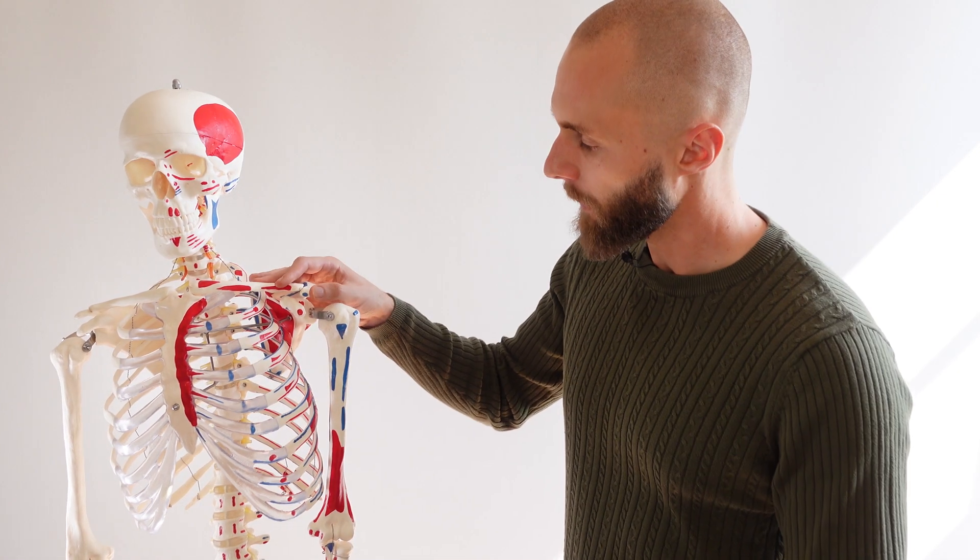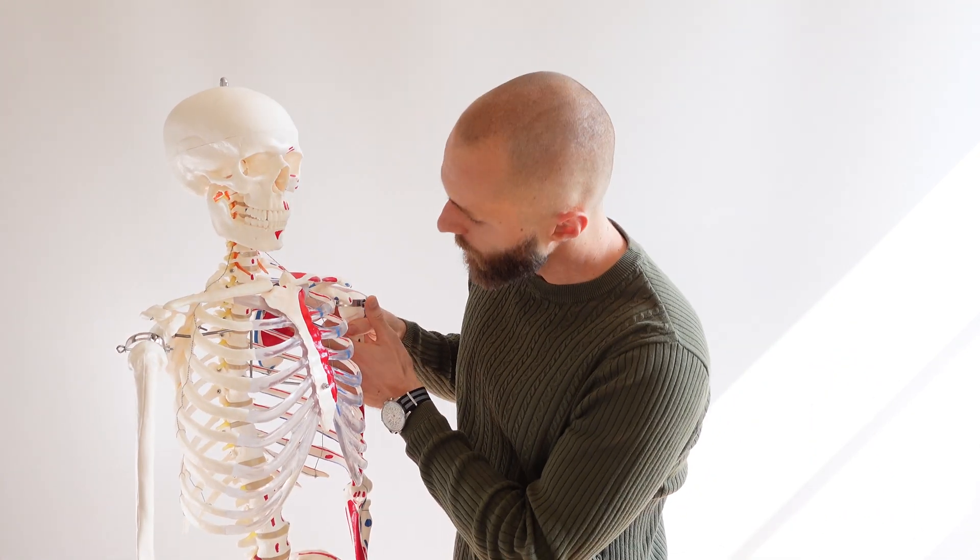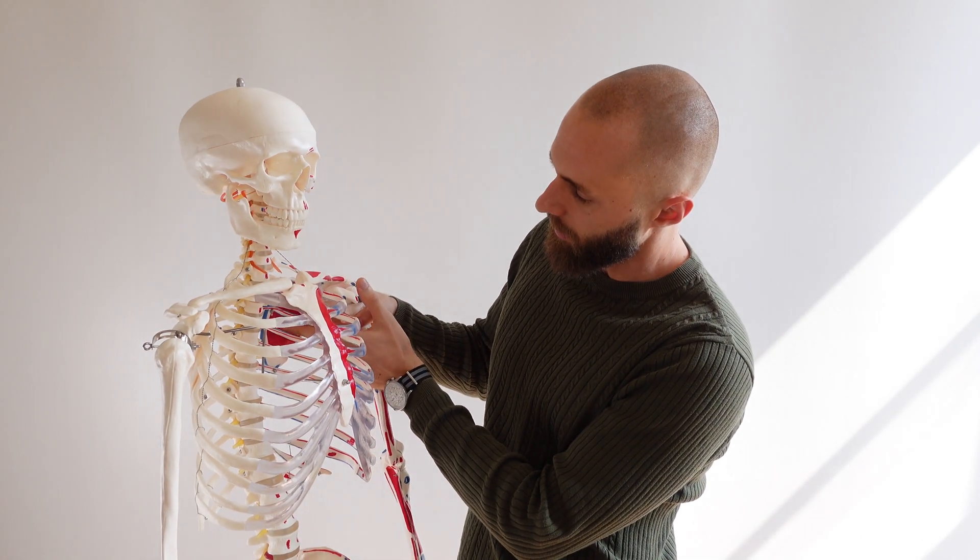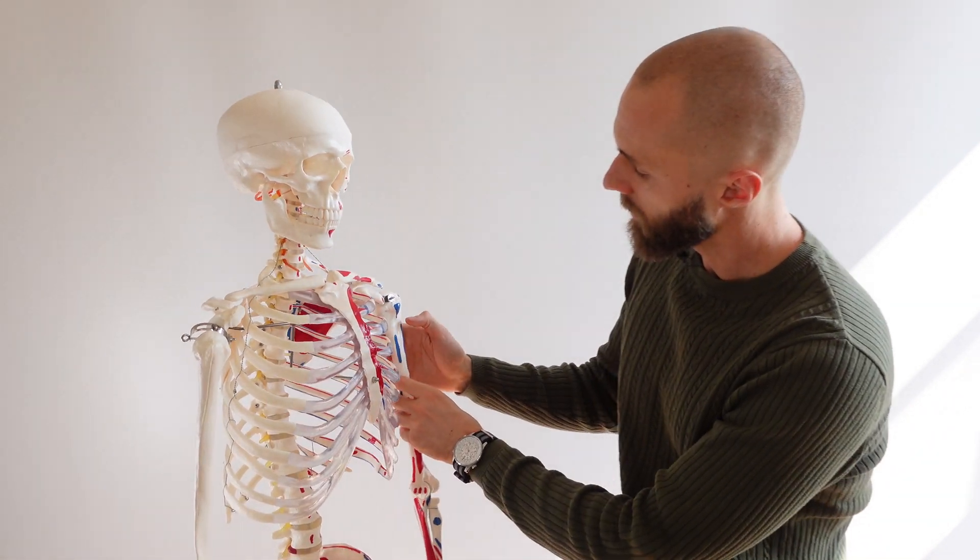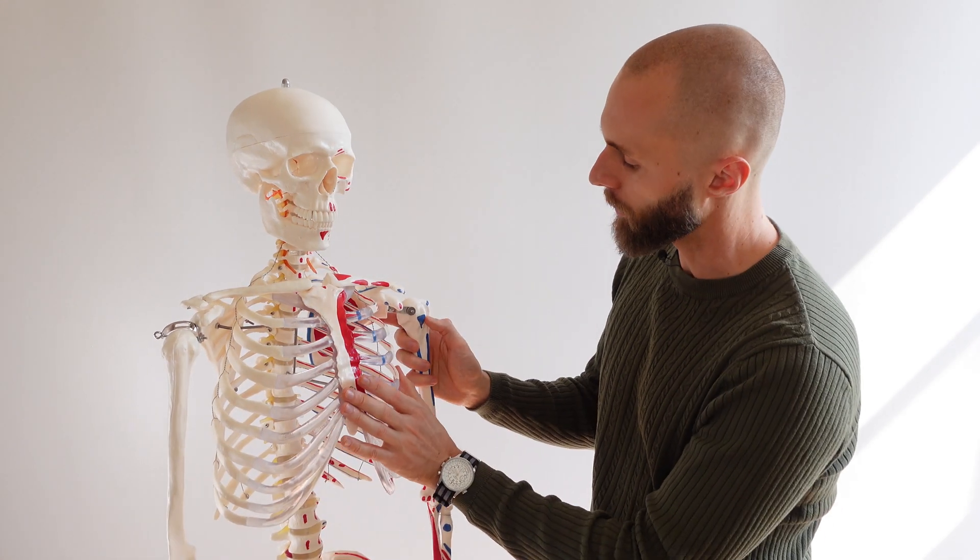We're back here at the skeleton model and you can see the origin of the subscapularis muscle here in red. It originates on the subscapular fossa and the insertion over here in blue is on the lesser tubercle of the humerus.